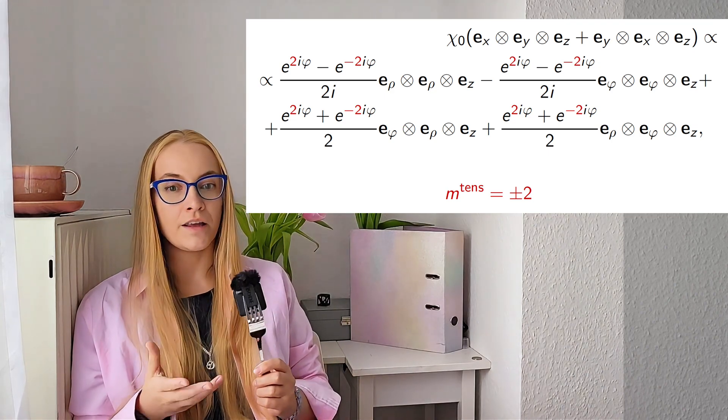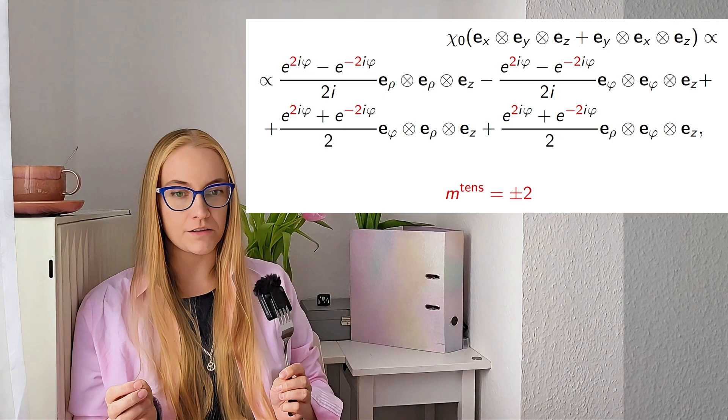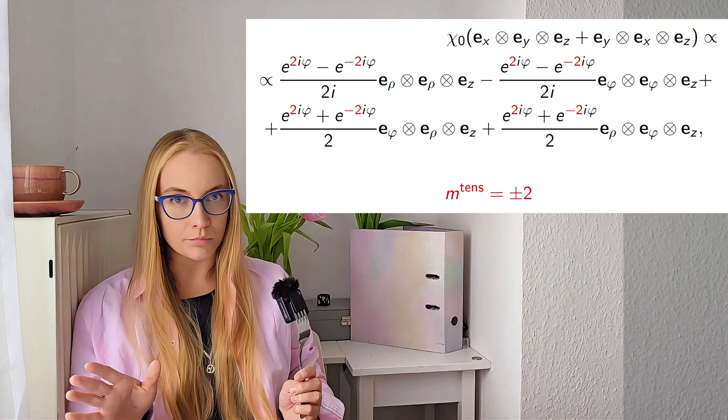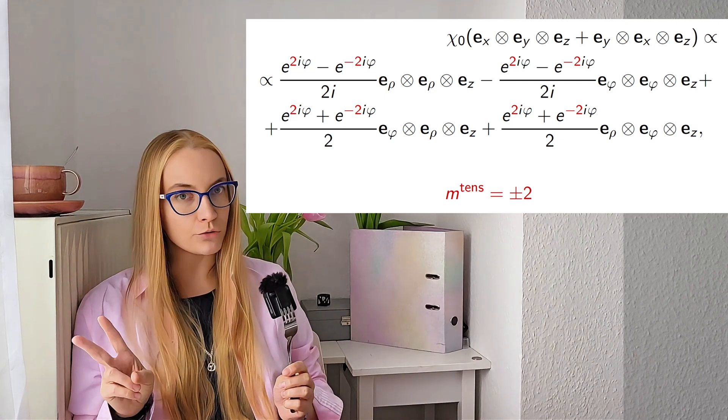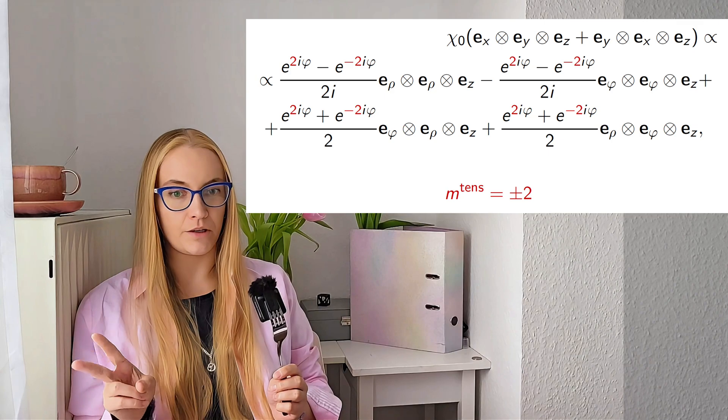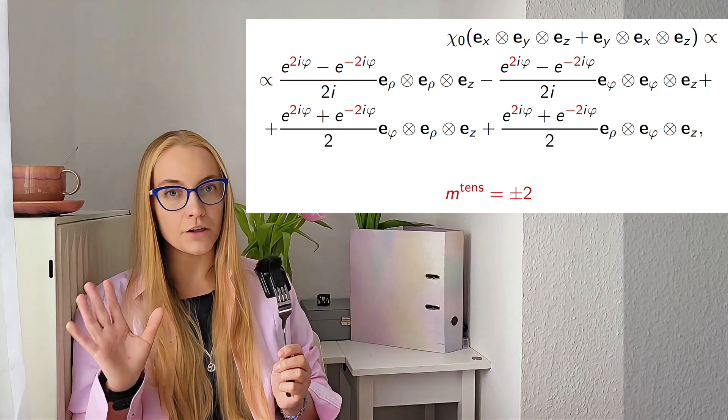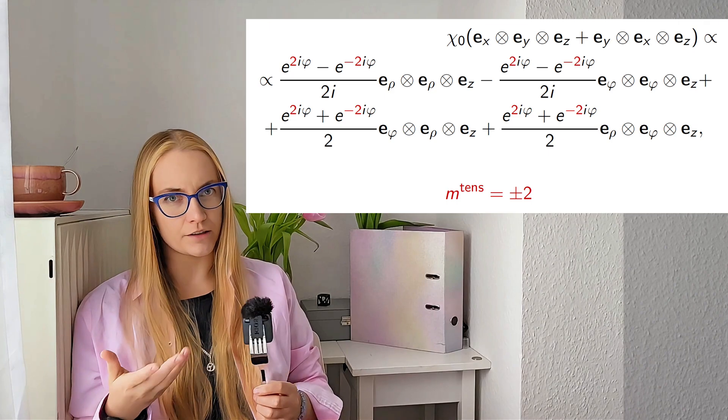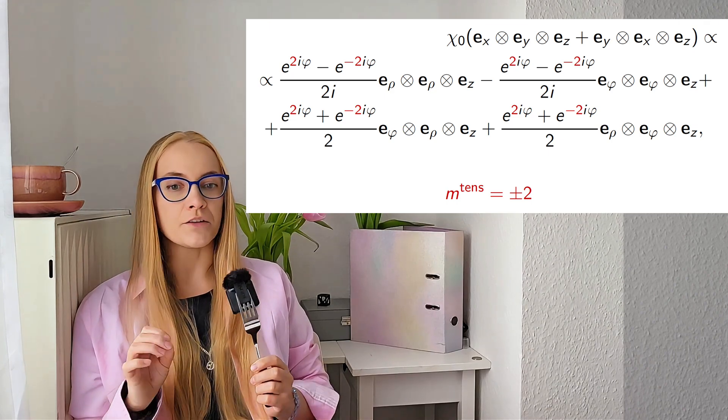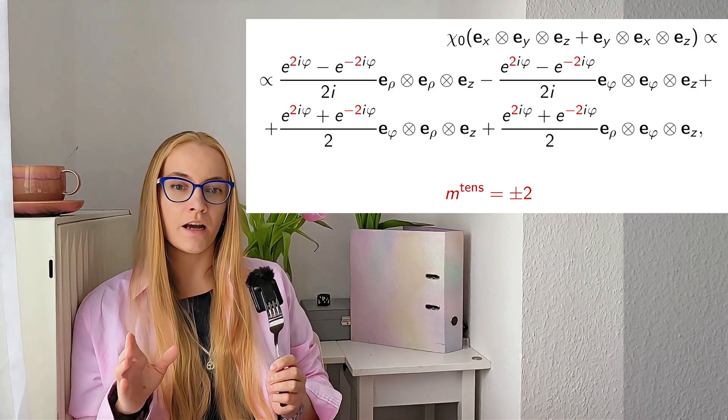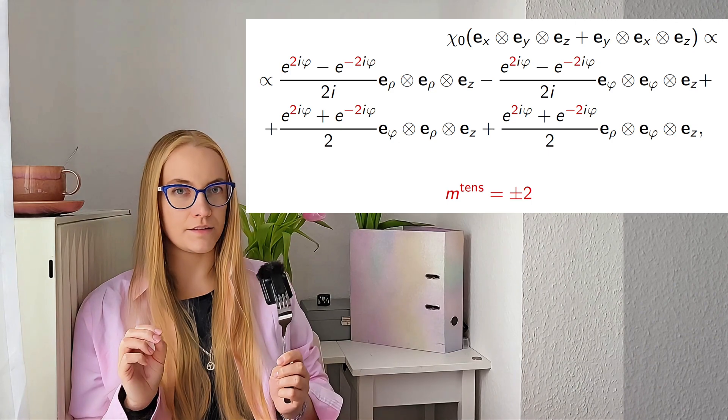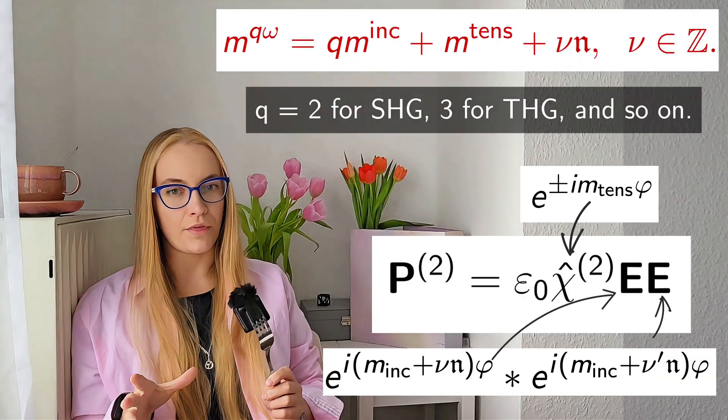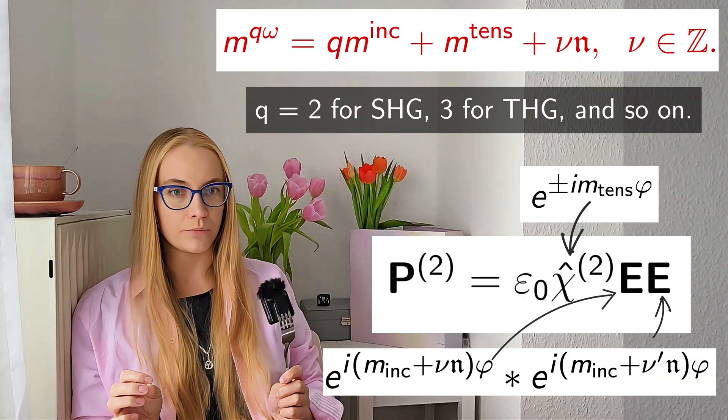So for gallium arsenide it is only two and minus two, not any multiple of two. Only two additional angular momentum projections. This is a huge difference and it is sometimes written incorrectly in old papers. So the actual selection rules are more strict than they may seem.